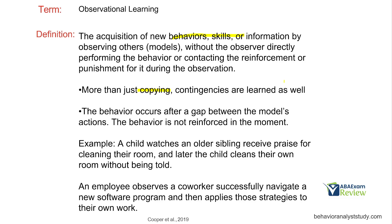Observational learning is often much deeper than imitation. The behavior occurs after a gap between the model's action. For example, you watch somebody cook an apple pie, and then three nights later you decide to cook that same apple pie — that is observational learning. Another example: a child watches an older sibling receive praise for cleaning their room, and later cleans their own room without being told. The child didn't receive the praise directly but understood the contingency and acted on it.